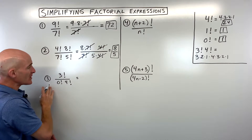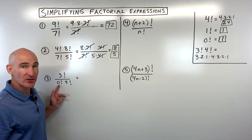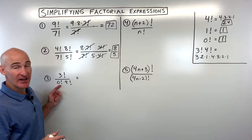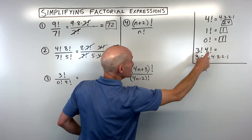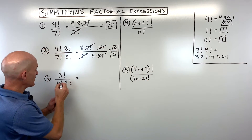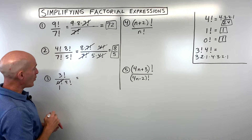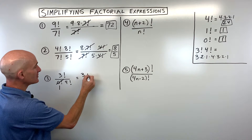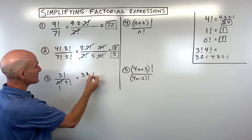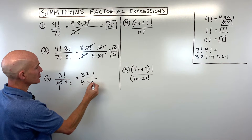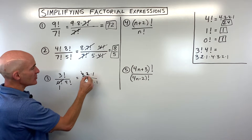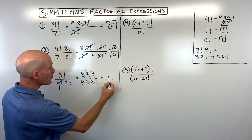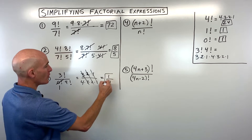For number three, we've got a zero factorial, and your first instinct might be to say you can't divide by zero. But remember, zero factorial is equal to one. So this is really just like the number one — one times anything is itself. So three factorial is three times two times one, and four factorial is four times three times two times one. The three, two, and one are canceling out, leaving one in the numerator divided by four, so one-fourth.